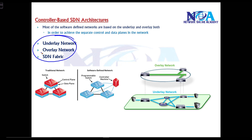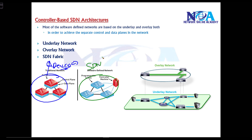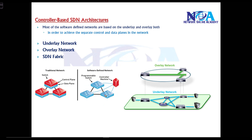Most SDN networks are completely based on underlay and overlay. To achieve a separate control plane and data plane — unlike traditional networks where the same devices do both — all networking devices would do forwarding (the data plane) as well as make decisions and build routing tables. With SDN, we separate the control plane, placing it on the SDN controller, while the networking devices handle only the data plane.